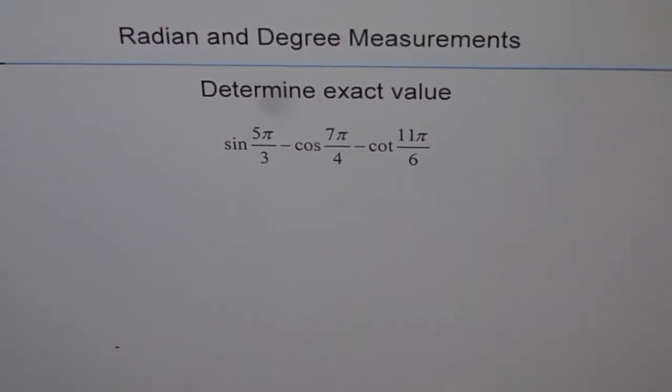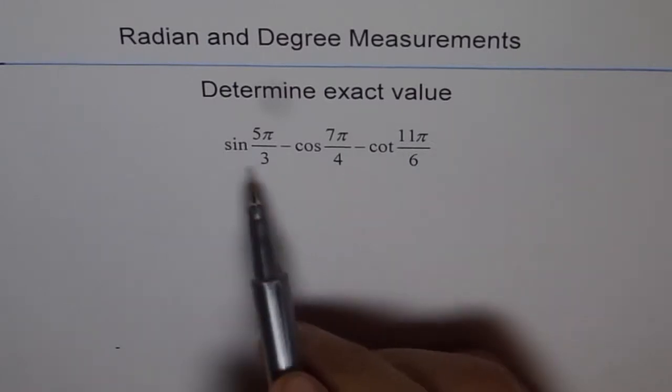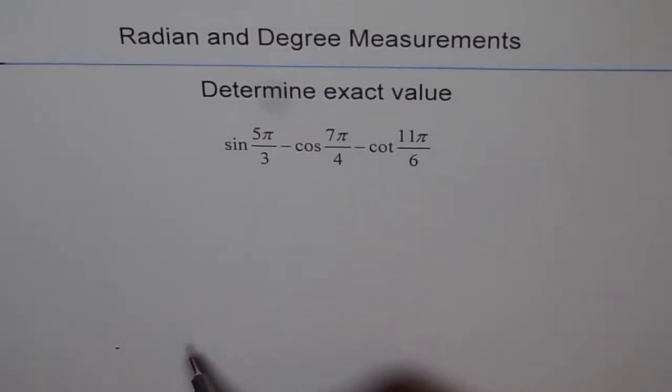Radian and degree measurements, determine exact value: sine 5π/3 minus cos 7π/4 plus cot 11π/6. Now all kinds of triangles are here with us, so it's good to draw our standard special triangles.